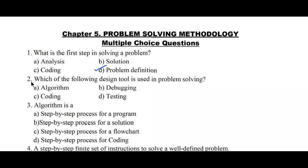Question number 2: Which of the following design tool is used in problem solving? Options are A. Algorithm, B. Debugging, C. Coding, D. Testing. So in a designing phase we are going to write an algorithm. Hence option A, Algorithm, is the right answer.